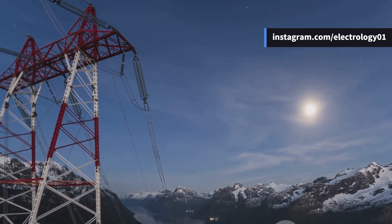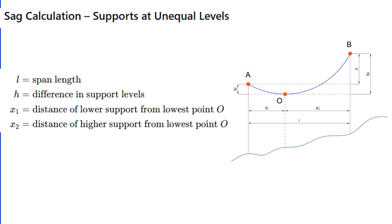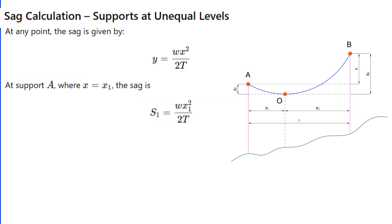Things get more interesting in hilly areas when supports are at unequal levels. The lowest point O is not in the middle. Suppose the span length is l, the difference in support levels is h, the distances from lowest point O are x₁ and x₂, and the tension is T.